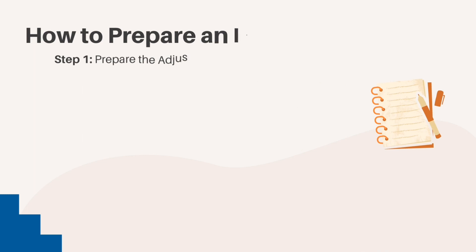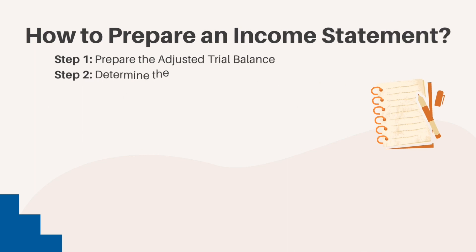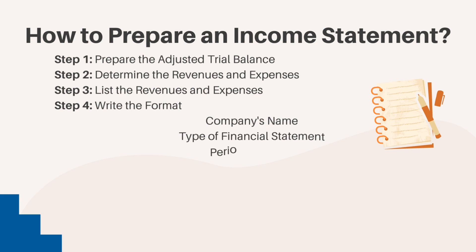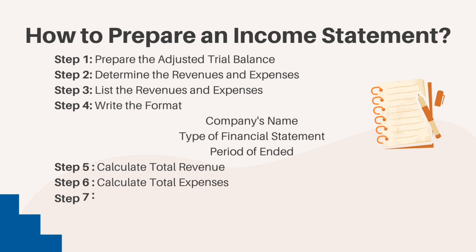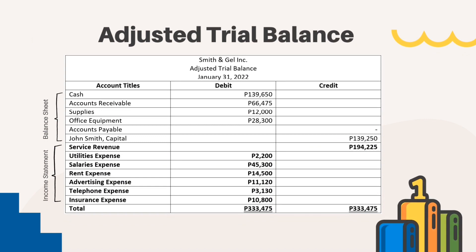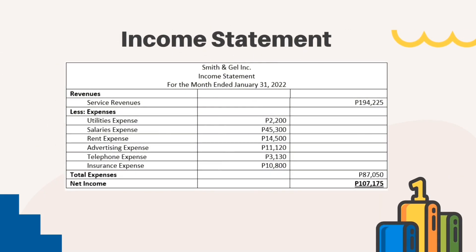Here are the steps for preparing an income statement. Step 1: Prepare the adjusted trial balance. Step 2: Determine the revenues and expenses. Step 3: List the revenues and expenses. Step 4: Write the format. Step 5: Calculate total revenue. Step 6: Calculate total expenses. Step 7: Calculate total profit. Here is an example using the adjusted trial balance of Smith & Gell Inc. You have to identify first the revenues and expenses on the adjusted trial balance, then calculate the total revenues and expenses and the net income.